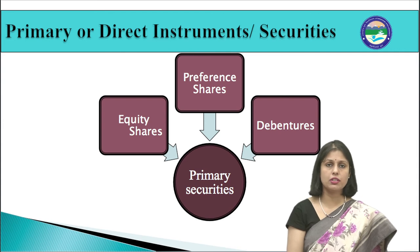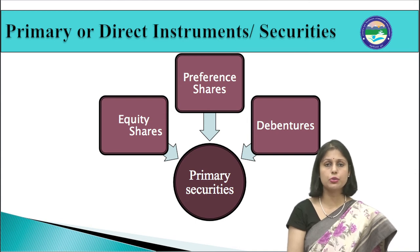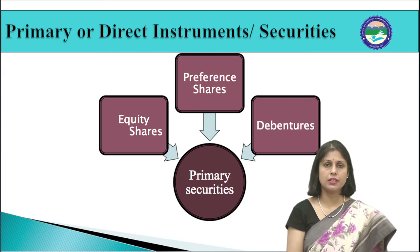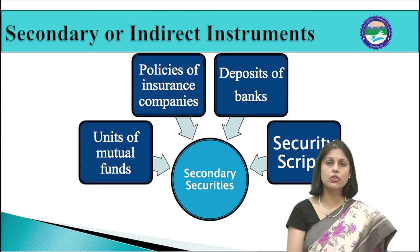Preference share is a hybrid security having features of both equity and debentures, combining both ownership and creditorship privileges. Holders of such securities have preference or prior rights over equity holders in respect of fixed dividend as well as return of capital. All preference shares are redeemable within 10 years. Secondary or indirect securities are financial assets issued by financial intermediaries such as units issued by mutual funds, policies of insurance companies, deposits of banks, and security receipts issued by securitization and asset reconstruction companies.